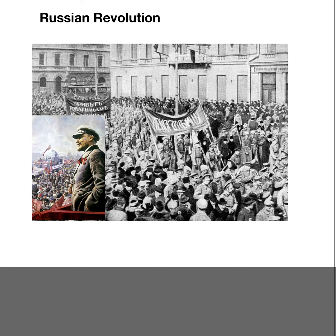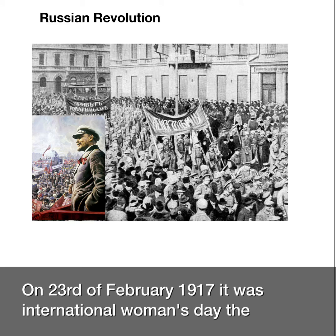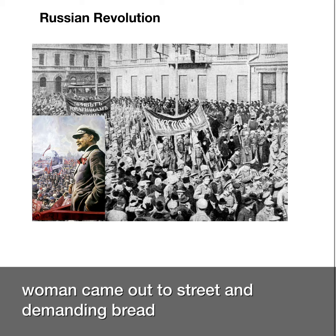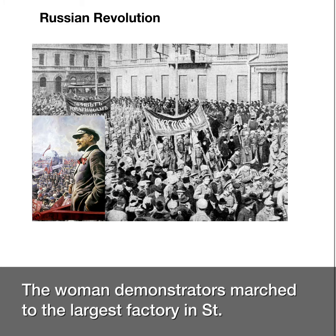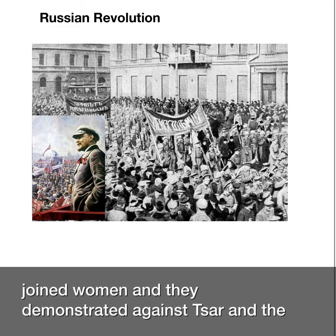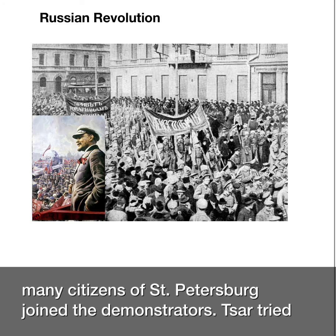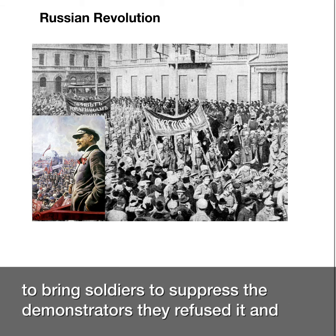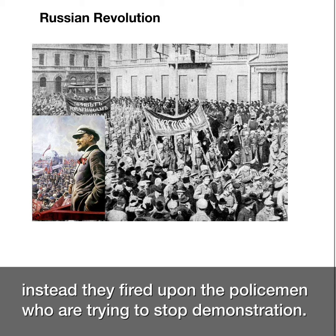The protest erupted again. On February 23, 1917, it was International Women's Day. The women came out to the street demanding bread and marched to the largest factory in St. Petersburg, where workers were striking. Thousands of workers joined the women and demonstrated against the Tsar, and many citizens of St. Petersburg joined the demonstrators. The Tsar tried to bring soldiers to suppress the demonstrators, but they refused and instead fired upon the policemen who were trying to stop the demonstration.